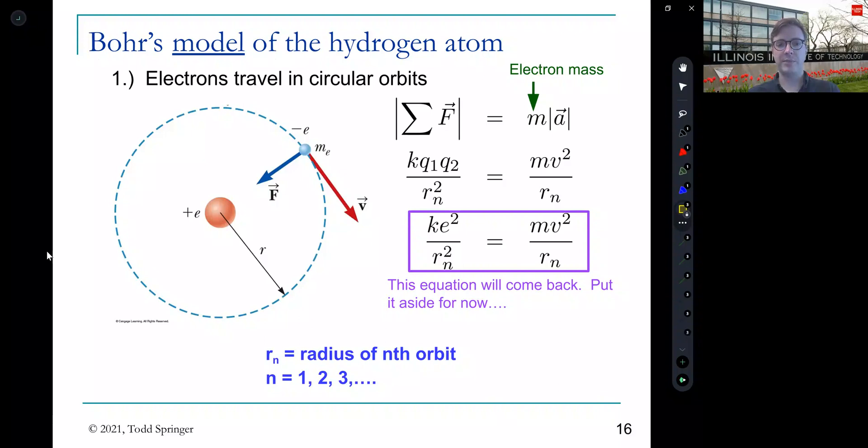It has two assumptions. The first one is that the electron is orbiting in a circular orbit, this planetary model. Okay. And from here, we can use classical physics, F equals ma. The force is the electrical attraction, k q1 q2 over r squared. And I'll explain what this subscript n is doing here in a second. So that's the force between the electron and the proton. And then here I have mv squared over r. That's a centripetal acceleration.